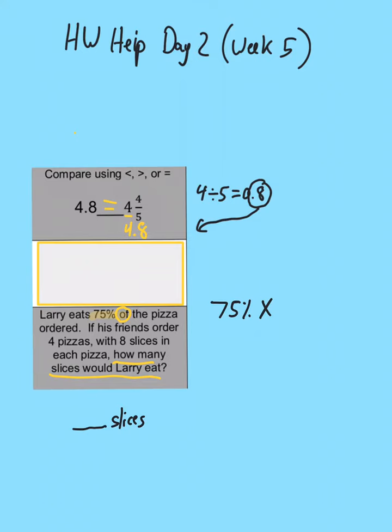Now notice they give us, his friends ordered 4 pizzas and 8 slices in each pizza. So if you take 4 pizzas times the 8 slices in each pizza, you'll get 32 total slices.